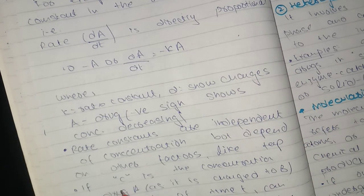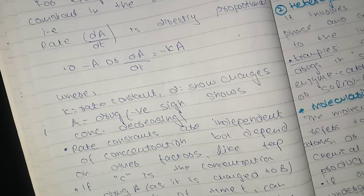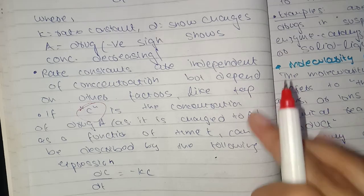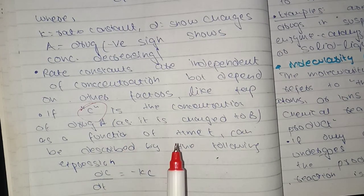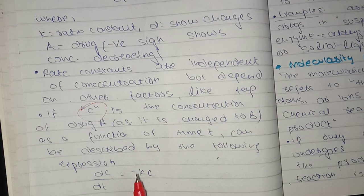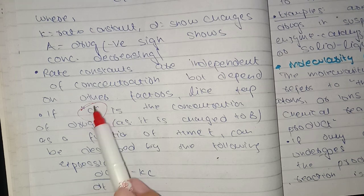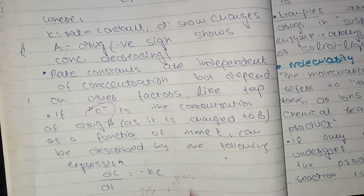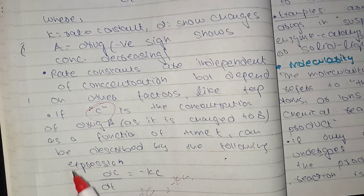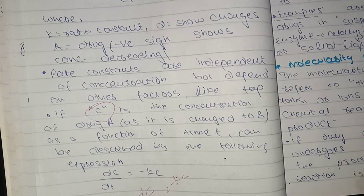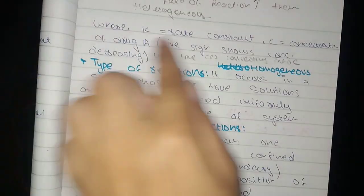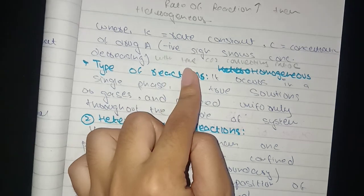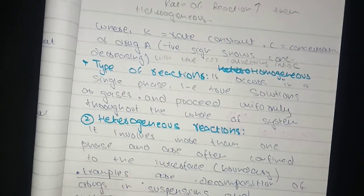If C is the concentration of drug A, and we describe this concentration as a function of time, we write this as dC/dt equals minus KC. K is the rate constant, C is the concentration of drug A, and the negative sign indicates that with the passage of time, it is decreasing.